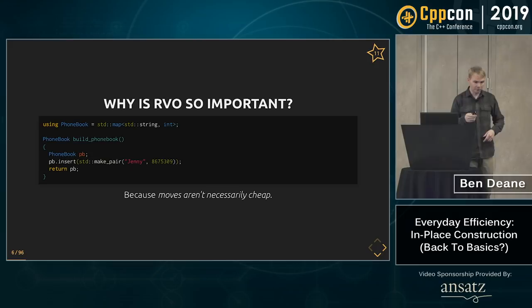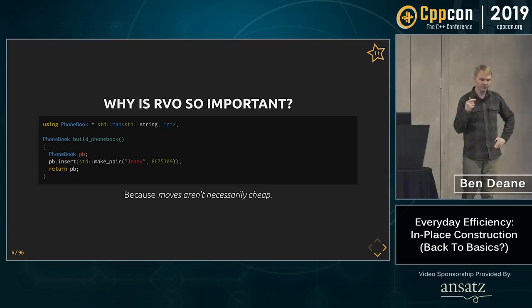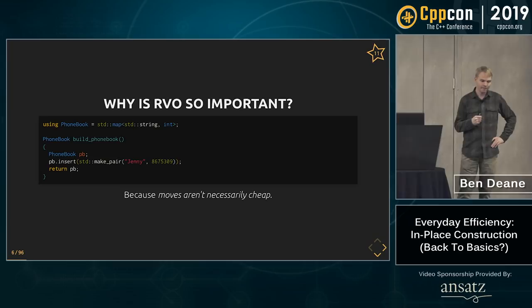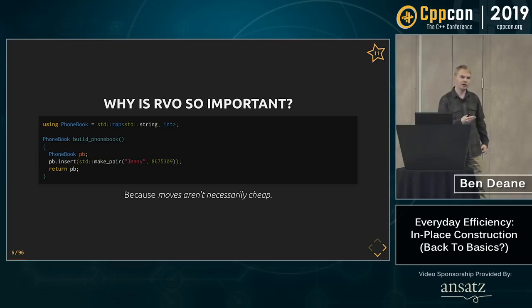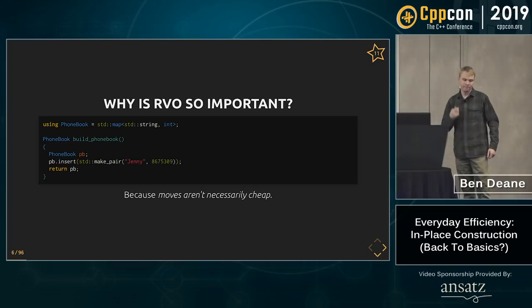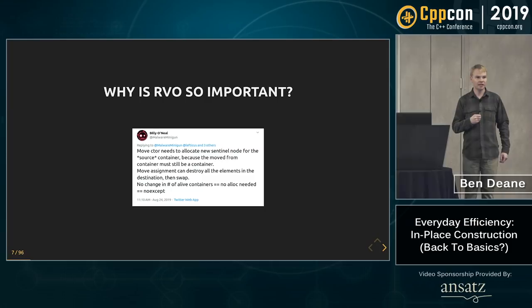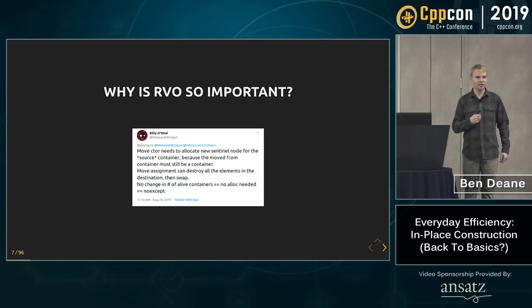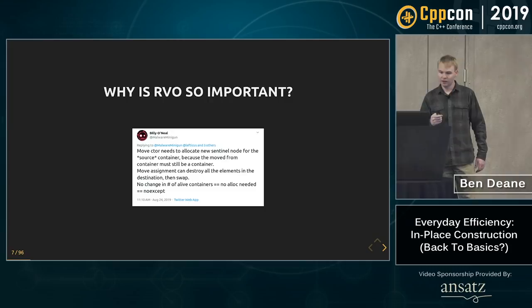So why is RVO so important? Moves aren't necessarily cheap — we saw that a string move isn't necessarily cheap. Here is an example where RVO does happen. The return value optimization, also known as copy elision — Phonebook is a map, we're returning it, hopefully getting RVO, and in this case we are. However, if we were not, this would be a move. Mandated from C++11, the compiler is required to try and move if it can't copy-elide. If you're using Microsoft's STL, a map is a node-based container needing a stable end iterator, meaning its move constructor must allocate. So if you accidentally don't get RVO and incur a move, you'll get an allocation — pretty much rule one of optimization is don't incur allocations when you don't need to.